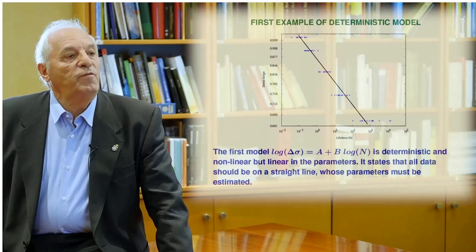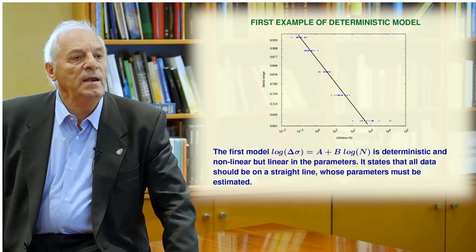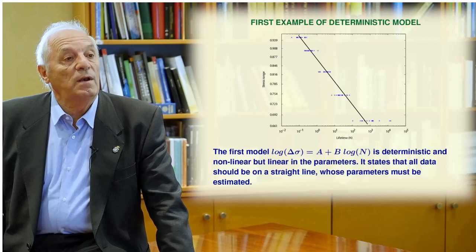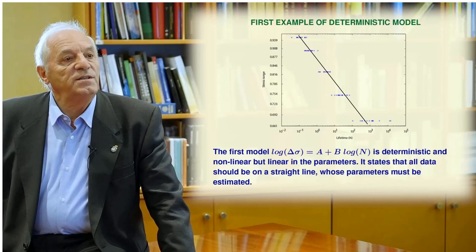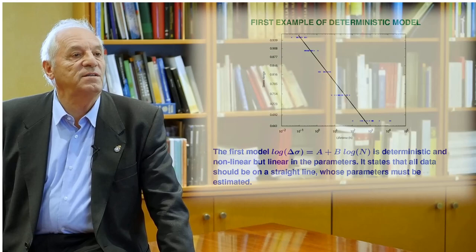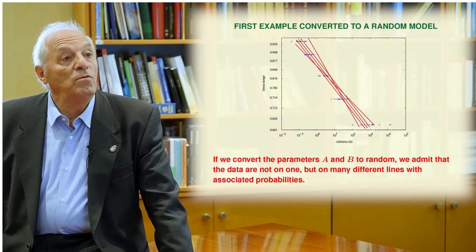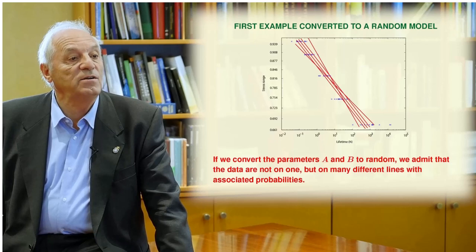In the course, you will have the opportunity to see several examples. In the first example, we consider the model log(delta sigma) = a + b·log(n), a deterministic and also linear model. We say that a model is linear when it is linear in the parameters, not in the variables, because the variables can be transformed in the data. This model states that the data should be on a straight line whose parameters must be estimated. Now we convert the parameters a and b to random. If we do that, we admit that the data are not on one but on many different lines with associated probabilities, meaning each data point comes from a different line.